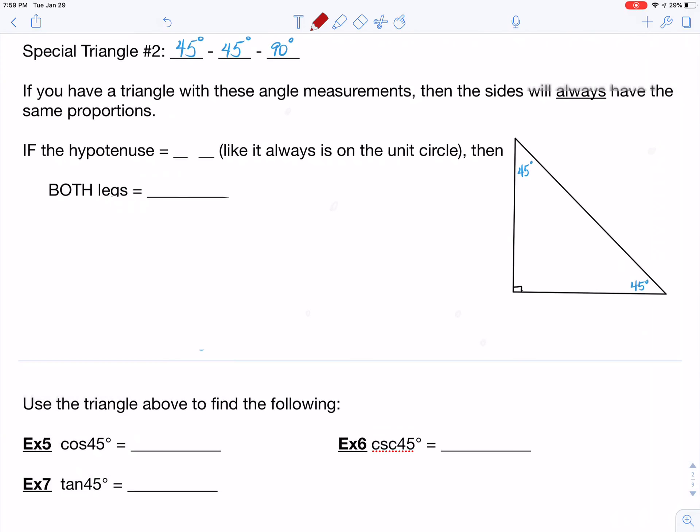And so what we have here is that if our hypotenuse is equal to one, like it is on the unit circle, like it was back on the first special triangle, then both of the legs are going to equal root two over two.